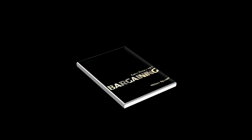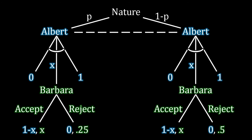Remember back to last time, we were looking at this game with one-sided incomplete information, or asymmetric information, where Barbara knew the value of her own outside option, but Albert was uncertain about it. He could only speculate whether Barbara had a particularly low outside option or a particularly high value for an outside option. What we did is figured out, based off of what Barbara would do if she was weak or strong, how Albert would mitigate this uncertainty.